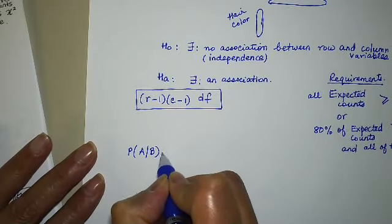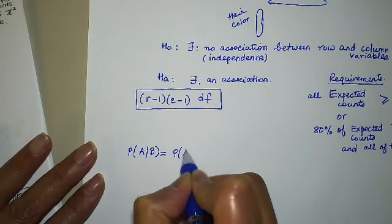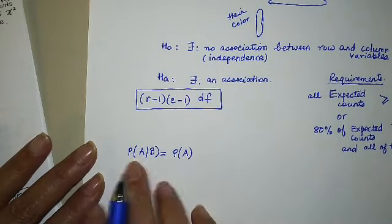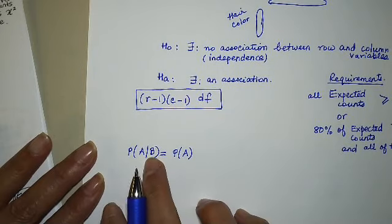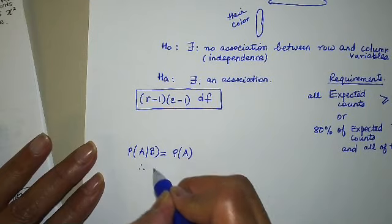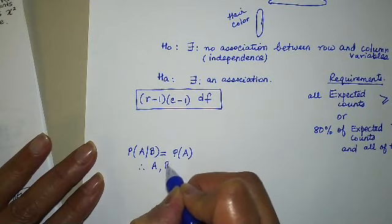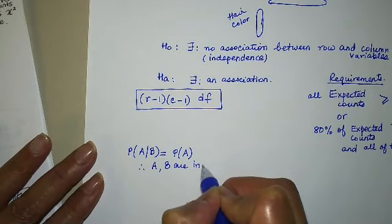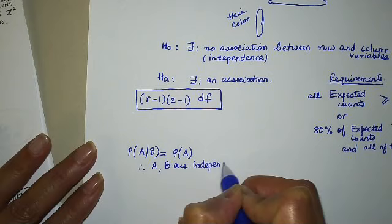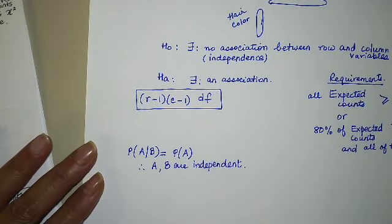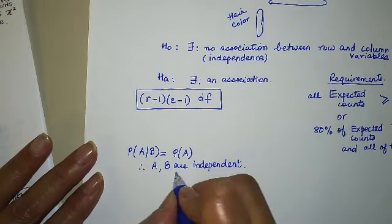This is the rule. If you recall, here is the rule for independence, right? Probability of A given B is equal to the probability of A. And if that's the case, it would mean that B had no impact on A. And therefore, A and B are independent.